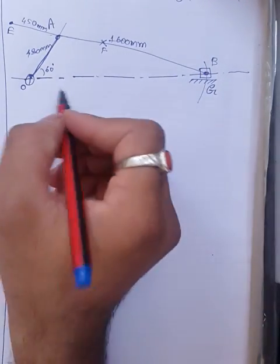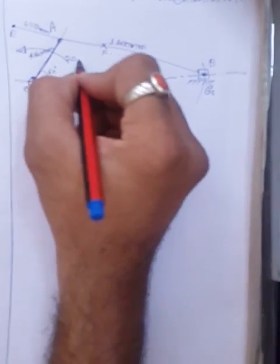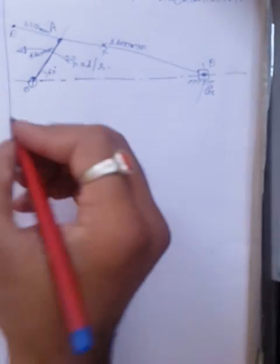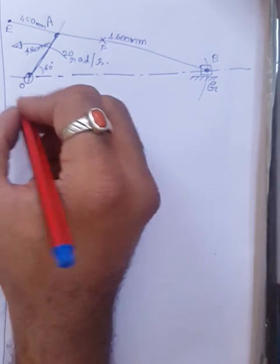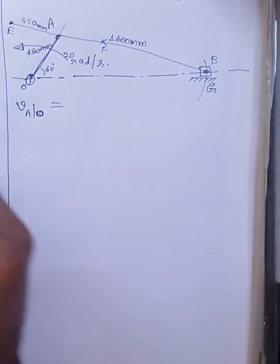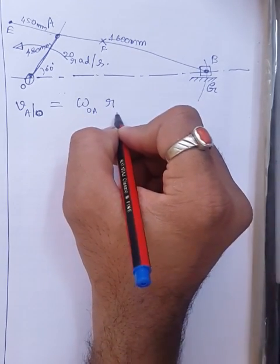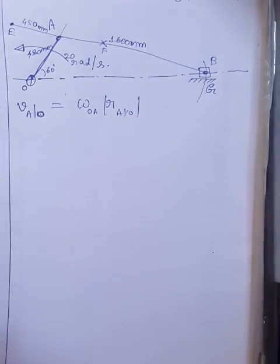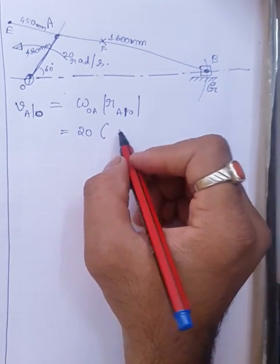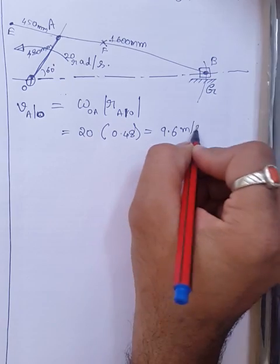The crank OA is rotating counterclockwise at an angular speed of 20 radians per second. The velocity of point A with respect to O is simply omega times the magnitude of the radius vector: V_A/O = 20 × 0.48 = 9.6 meters per second.